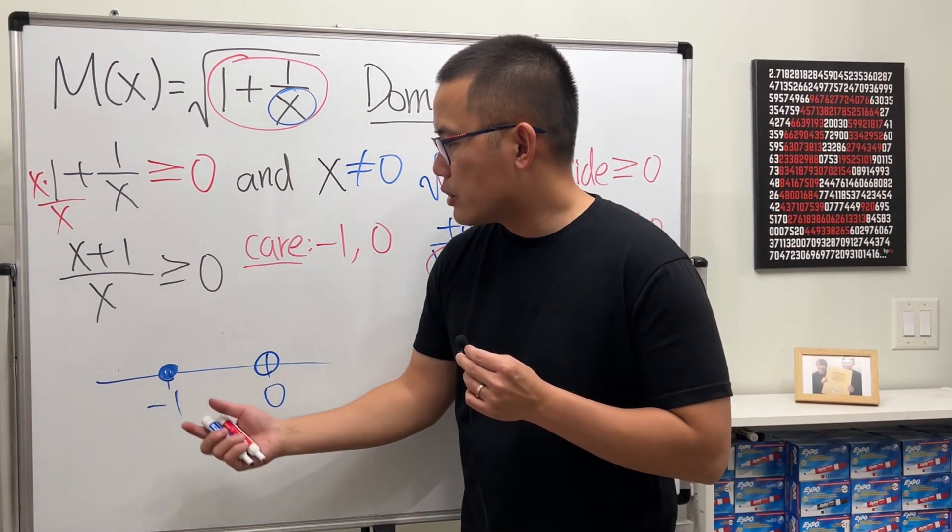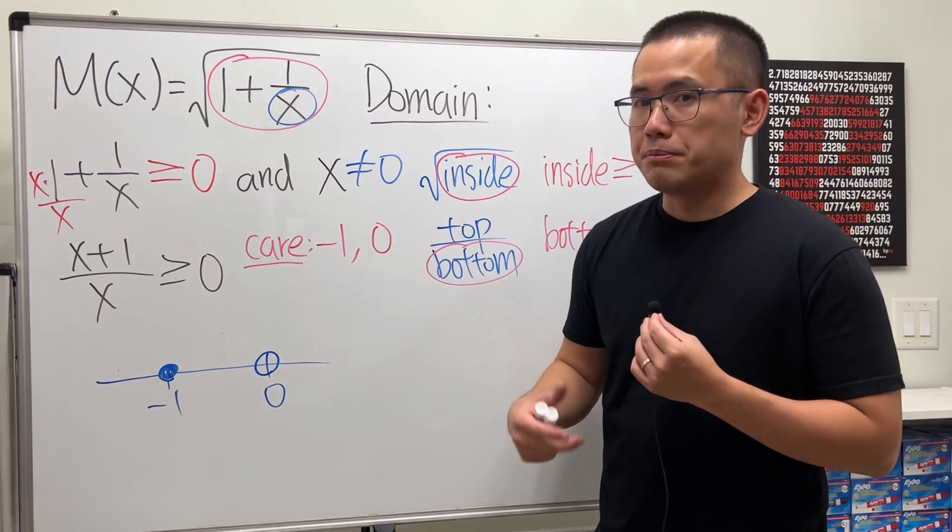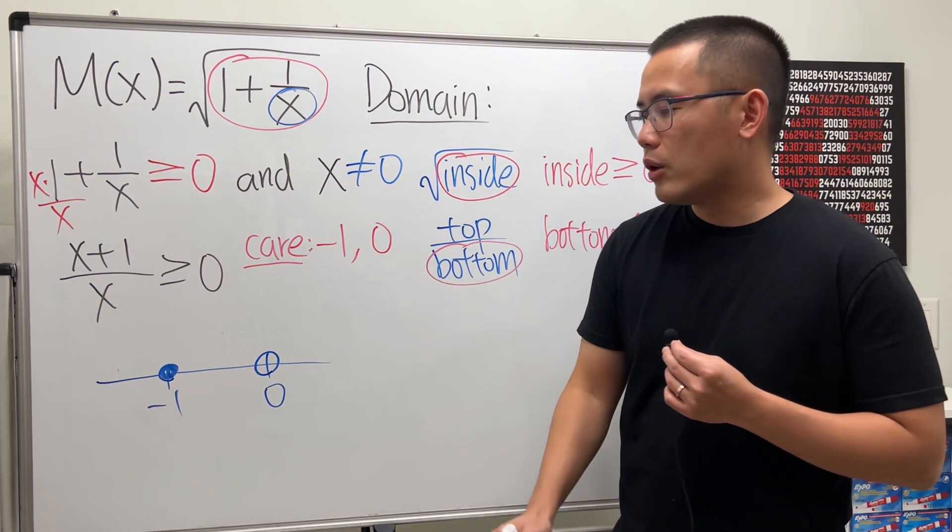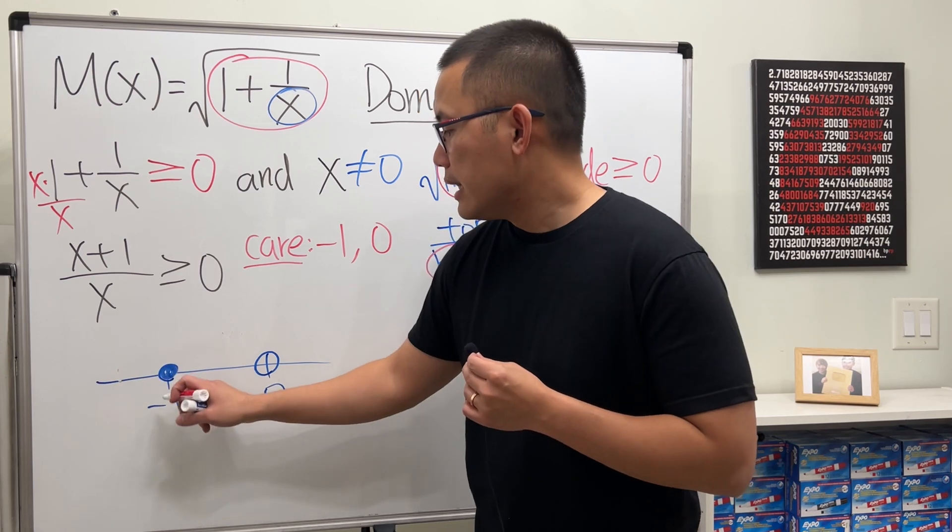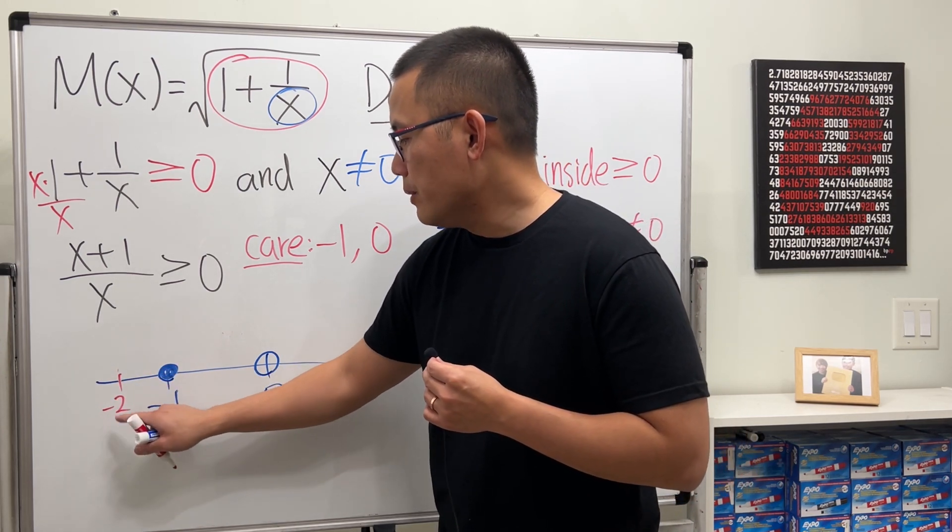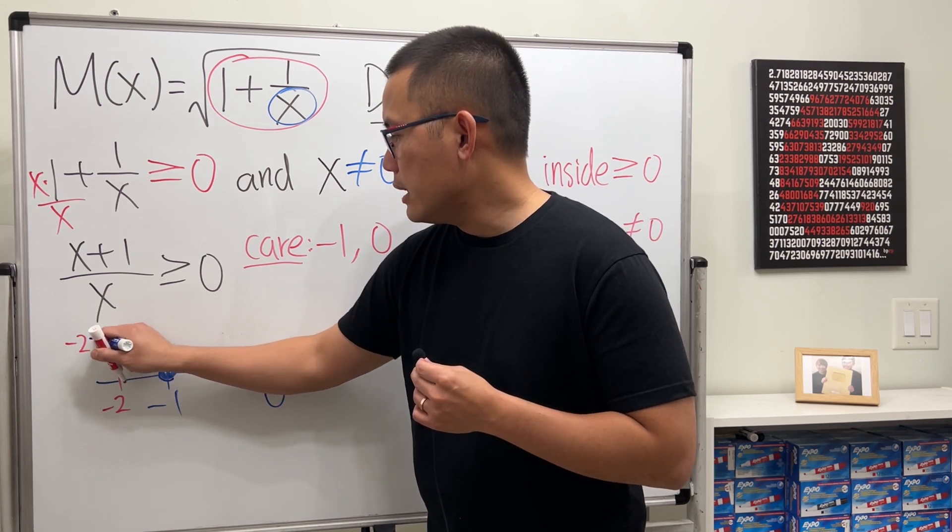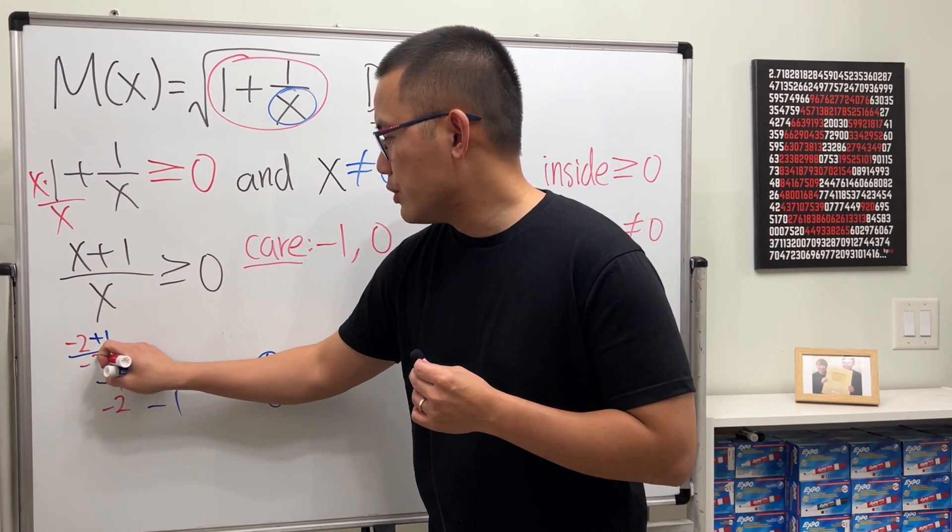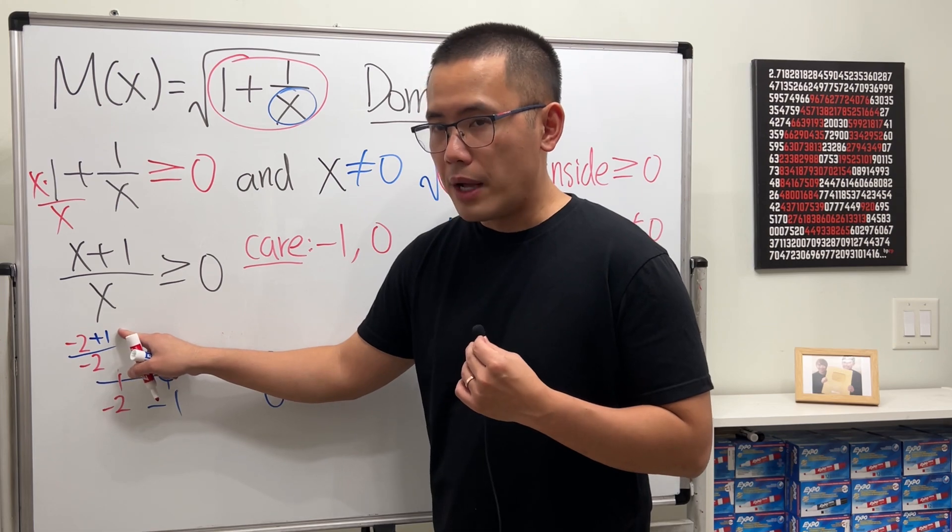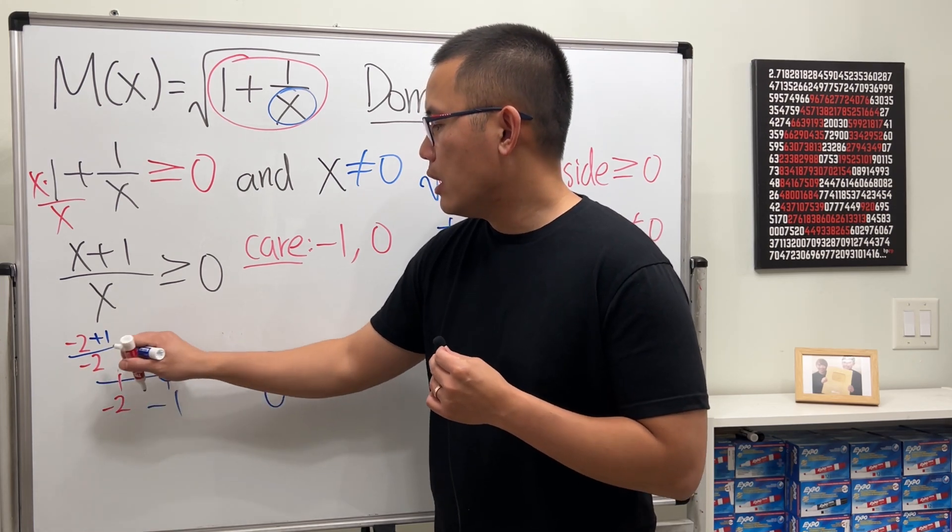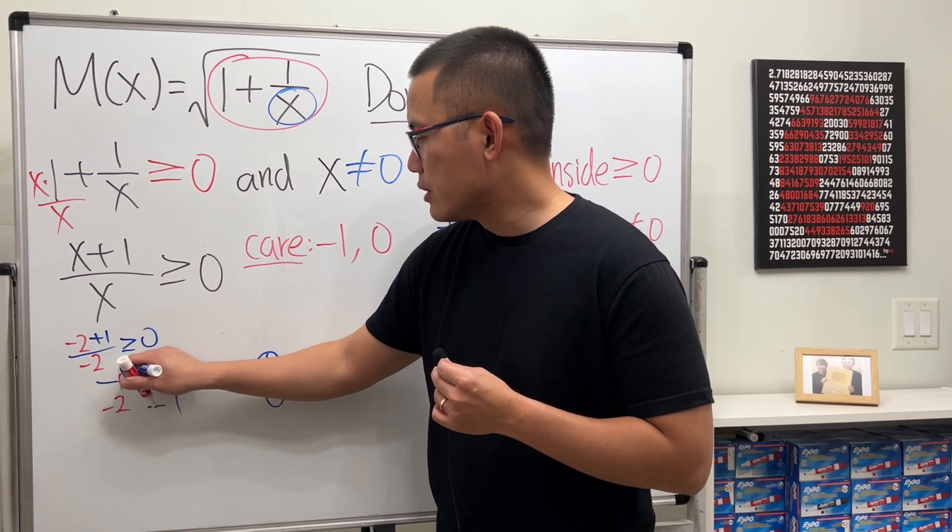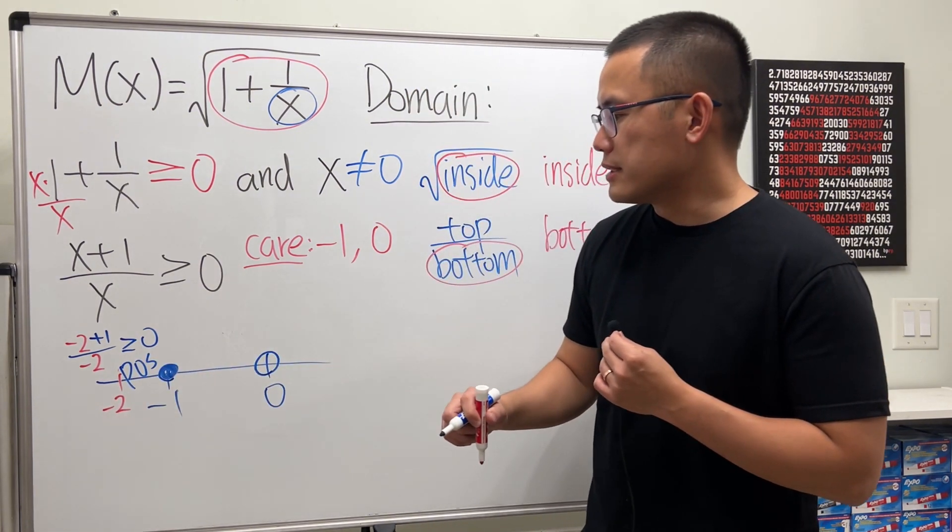Now, we have to just make sure which interval will give us positive result. And to do so, we can just pick a number that's less than negative 1. And let's say we use negative 2. And if you put it here, we get negative 2 plus 1 over negative 2. The top is negative 1. The bottom is negative 2. So all in all, we do get a positive result. So we will take this interval.